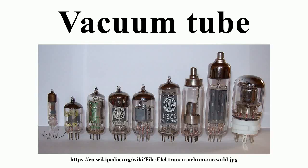In electronics, a vacuum tube, an electron tube, or just a tube or valve, is a device that controls electric current between electrodes in an evacuated container. Vacuum tubes mostly rely on thermionic emission of electrons from a hot filament or a cathode heated by the filament. This type is called a thermionic tube or thermionic valve. A phototube, however, achieves electron emission through the photoelectric effect.